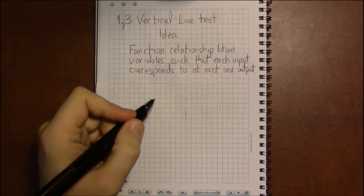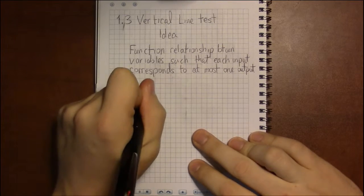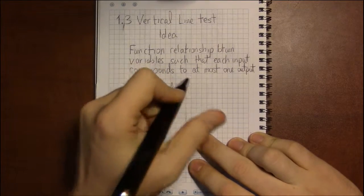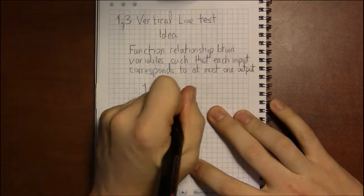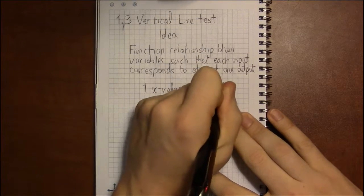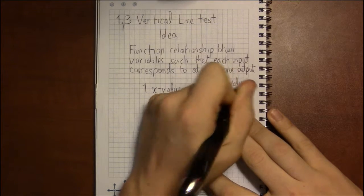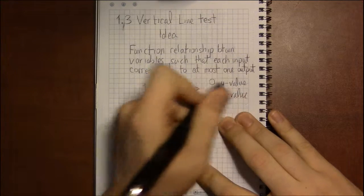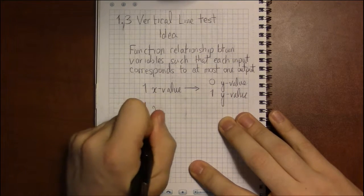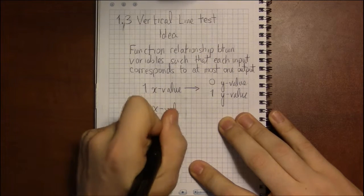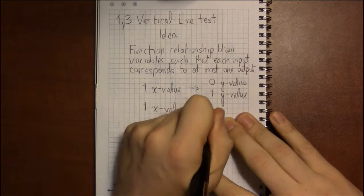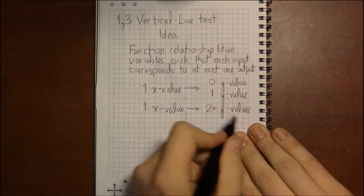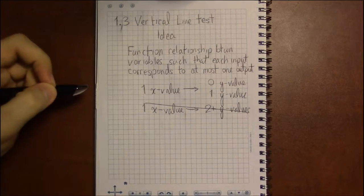So this is saying that one x value can either go to zero y values, it has no y value associated with it, or one y value. We can't have the case where one x value goes to two or more y values. That can't happen in a function.